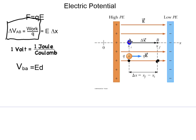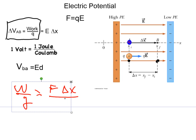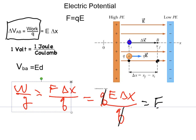Since the amount of work we have to do is equal to force times distance, and the force is equal to qE, the amount of work we have to do per coulomb is force times distance divided by coulombs — or qE times distance divided by q. The q's cancel, so another way of writing this is E times Δx if we move a charge through a constant electric field.